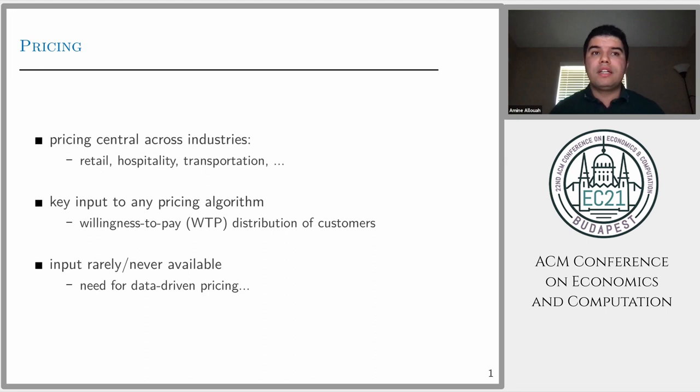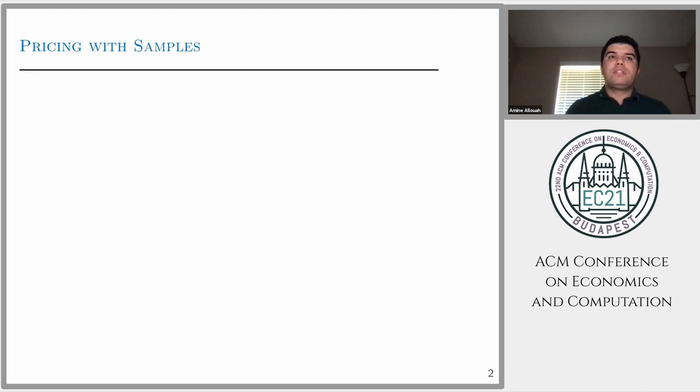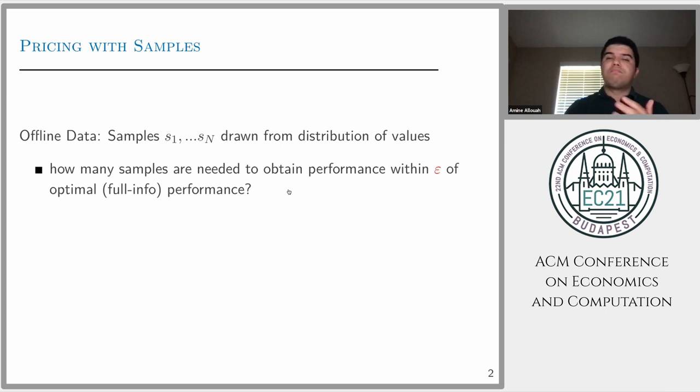One approach is assuming that we have some offline data, some samples, let's say S1 till SN, N samples. One question that previous work has looked at is how many samples are needed to obtain near-optimal epsilon-away performance compared to the full information when we know the exact distribution of values. Typically, this type of work shows that we need an order of one over epsilon samples to achieve this performance.